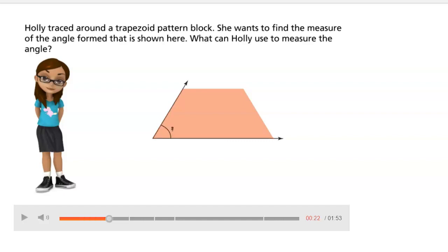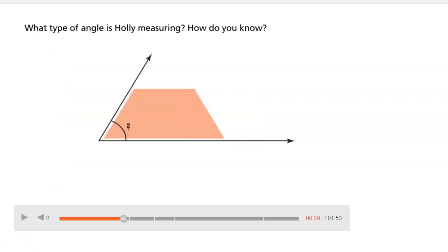This is the word problem that we have. Holly traced around a trapezoid pattern block. She wants to find the measure of the angle form that is shown here. What can Holly use to measure the angle? I would say the first step to solving this type of problem is thinking about what type of angle is Holly measuring, and how do you know?